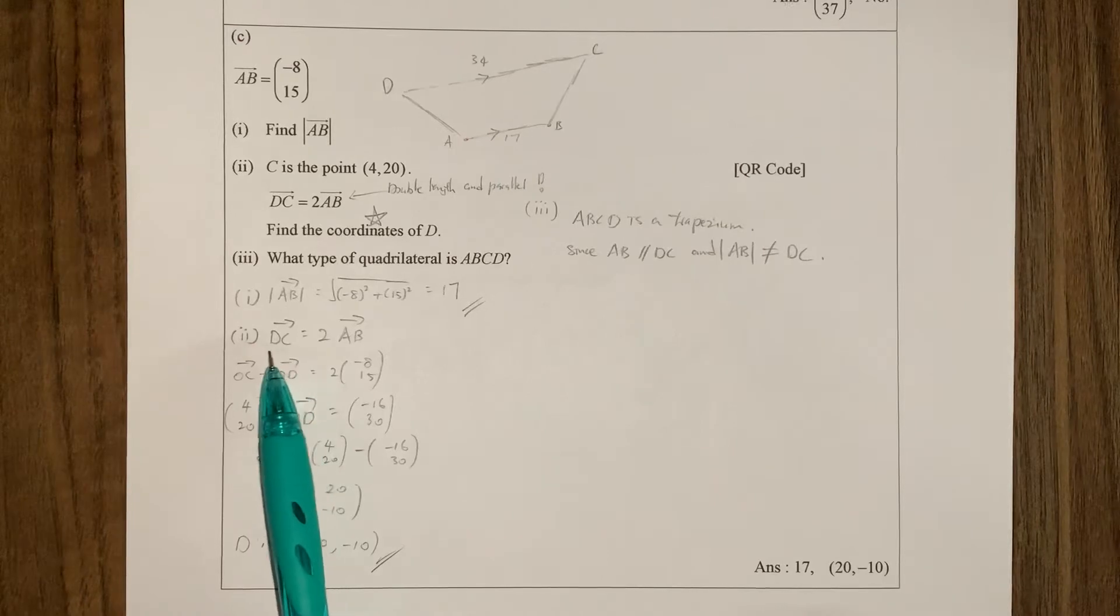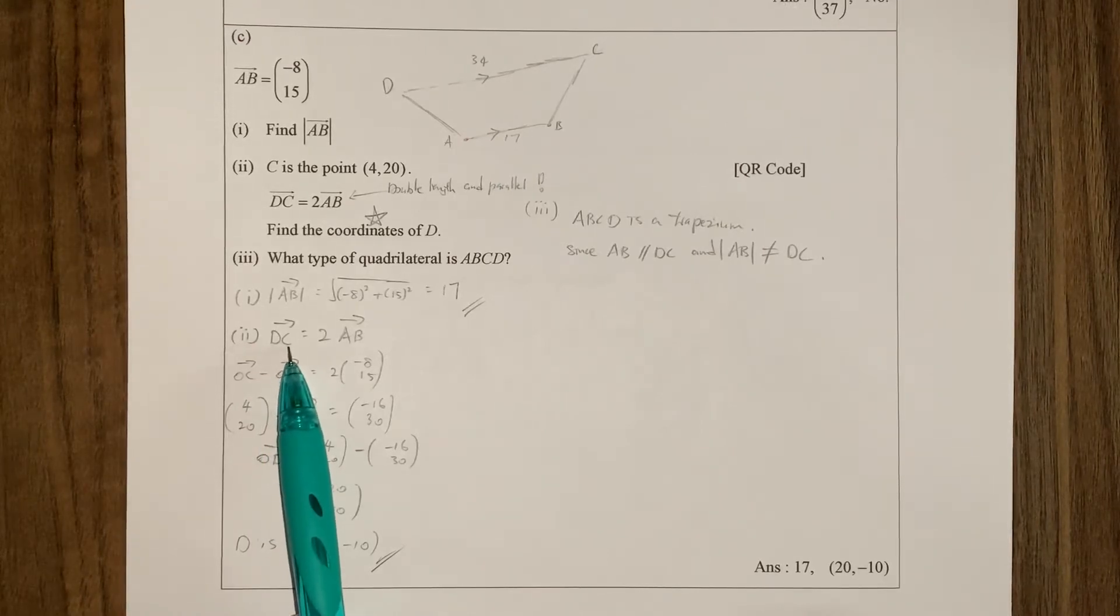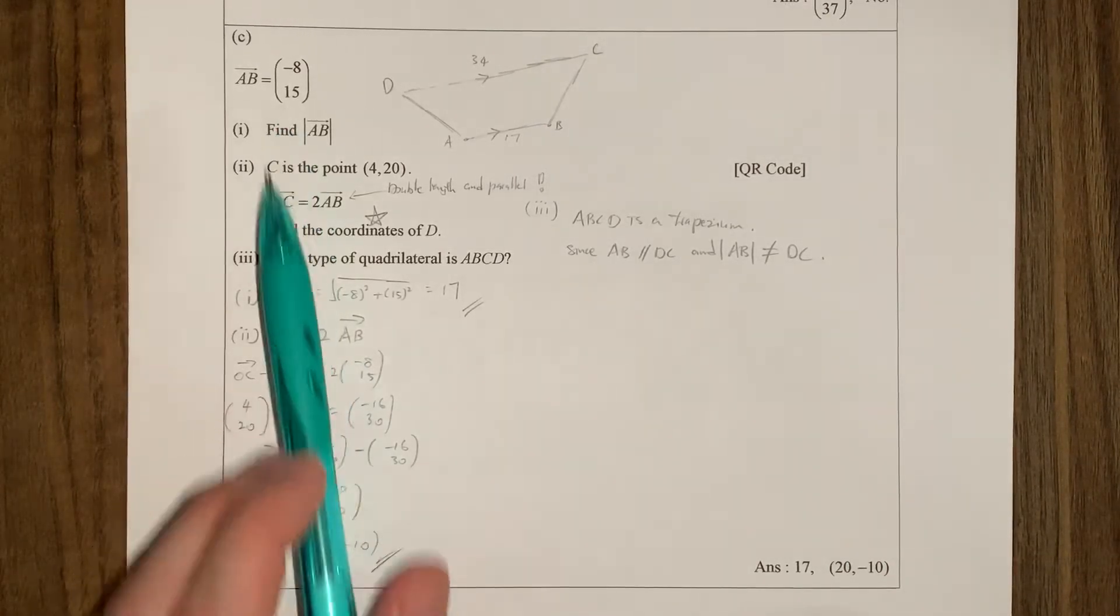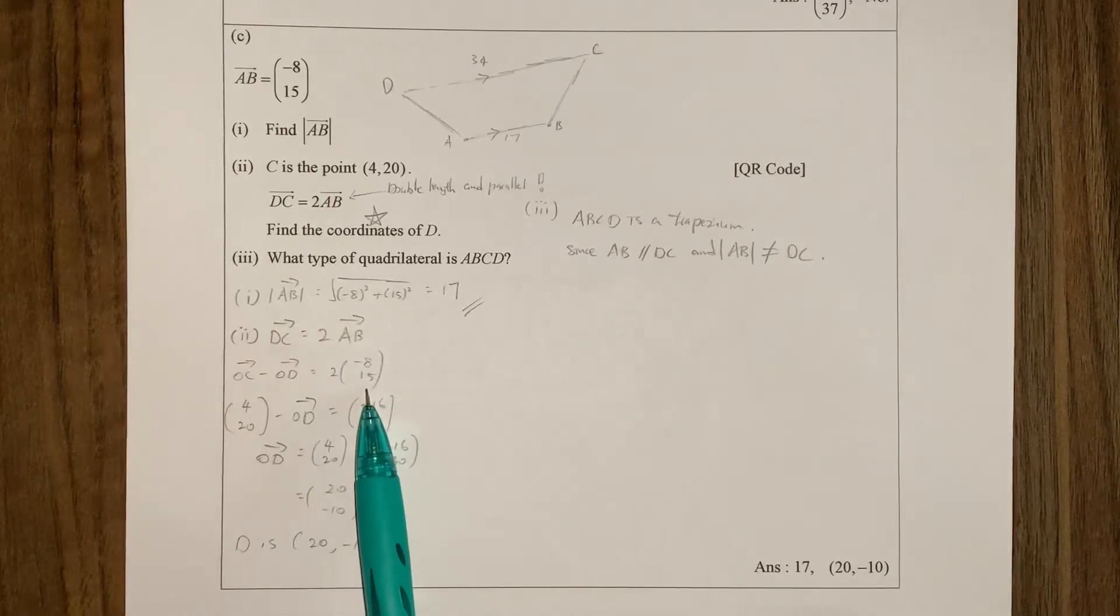So by using the position vectors, this is the second letter minus the first letter, right? So this is OC minus OD. So here. So AB I don't need to split because AB I already have. So AB is here. So it's two times this one. Okay.